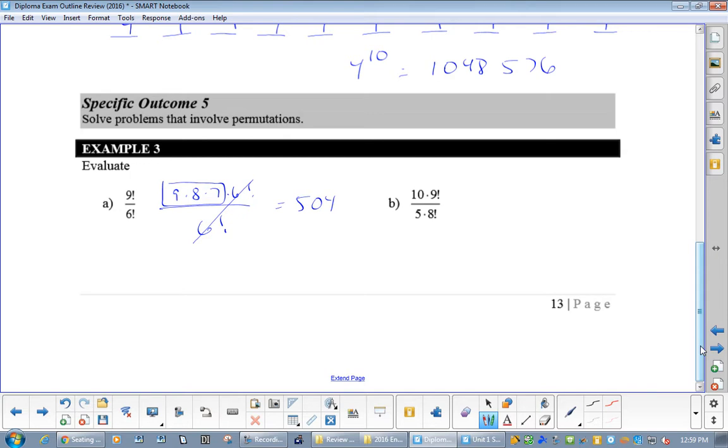Okay. Now, in B, you want to cancel something. So, start just making this nine times eight factorial over five times eight factorial. Those cross out.